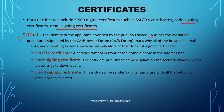All browsers, email clients, and operating systems show visual indicators. For an SSL/TLS certificate, a padlock symbol appears in front of the domain name in the address bar. For a code signing certificate, the software publisher's name displays on the security window when a user tries to download it. For an email signing certificate, the sender's digital signature is included with all outgoing emails.